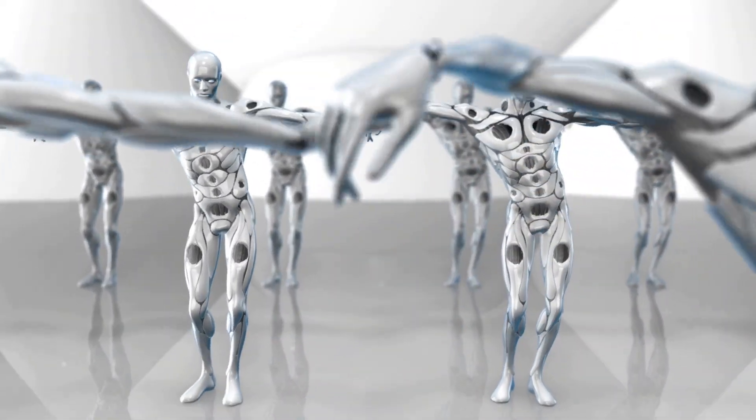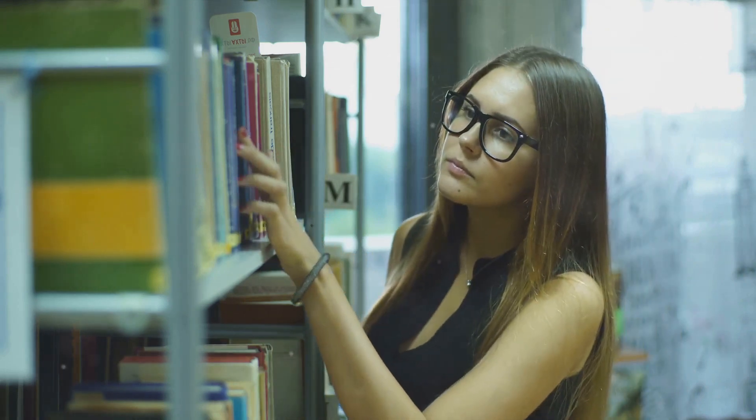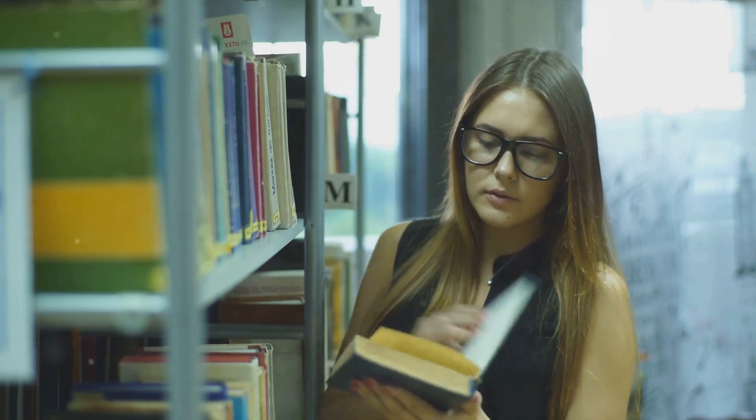In the grand scheme of things, knowledge is the information an AI system has access to, like a library full of books. Intelligence, on the other hand, is how effectively an AI system can use its knowledge to perform tasks, make decisions, and learn from new experiences.